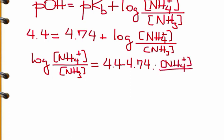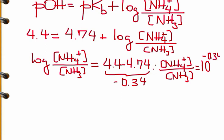From here, [NH4+]/[NH3] equals 10^-0.34. Plugging this into the calculator gives 0.46.